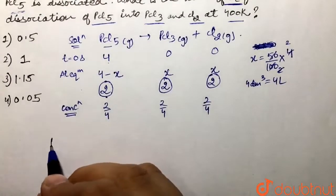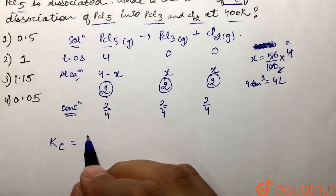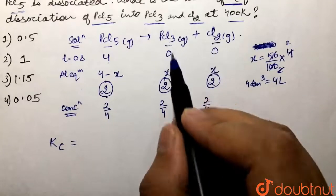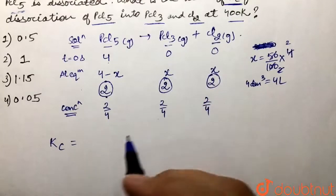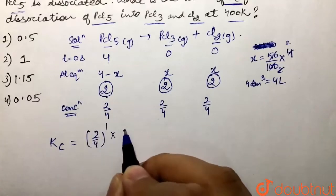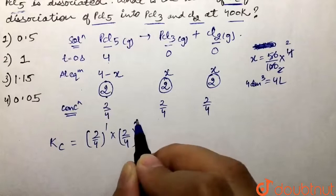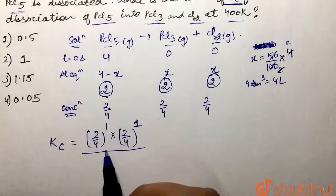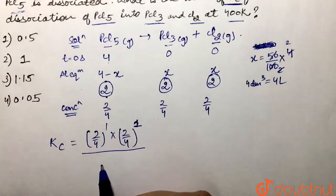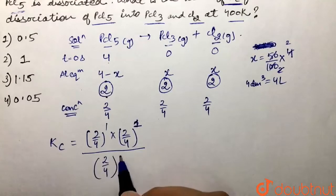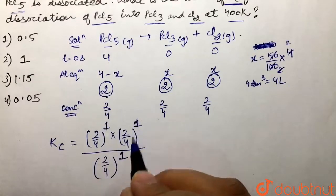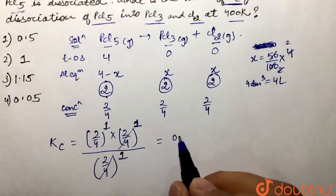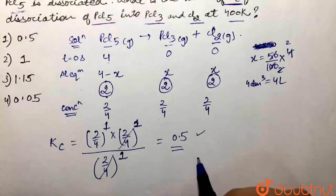Kc is basically the product of product concentrations raised to their stoichiometry. The products are PCl3 and chlorine, each with stoichiometry of 1, so their concentrations are 2/4 each. Divided by the reactant concentration — PCl5 is 2/4 raised to stoichiometry 1. All stoichiometries are 1, so the PCl5 terms cancel, giving Kc = 2/4 = 0.5.